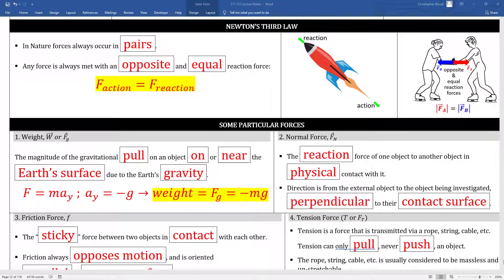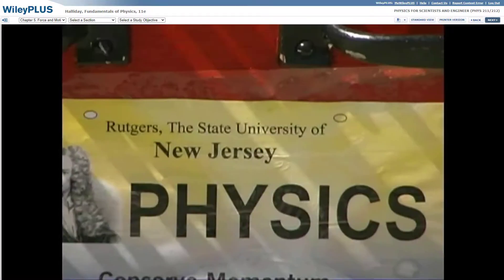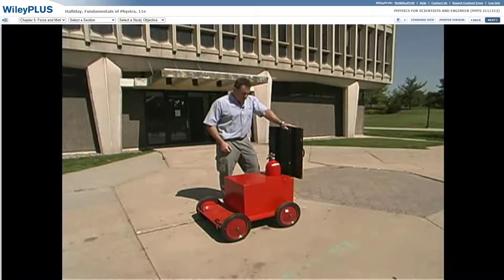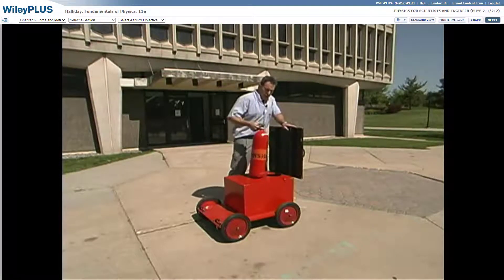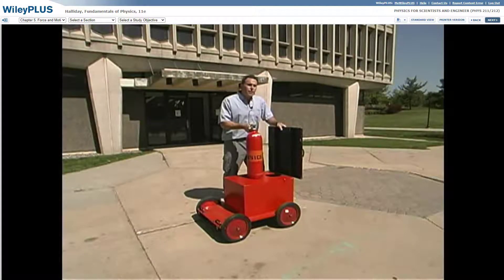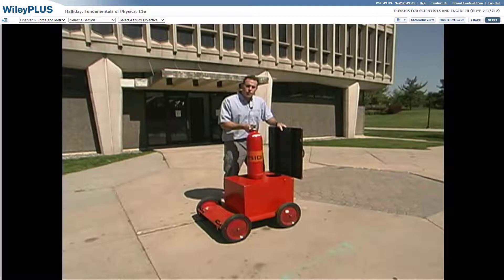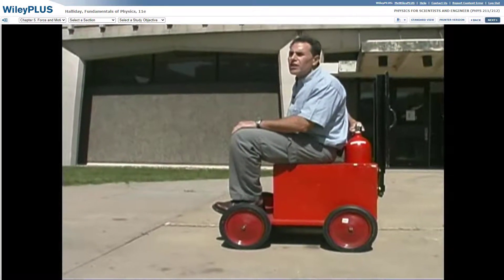Newton's third law. In nature, forces always occur in pairs. Any force is always met with an opposite and equal reaction force. You will never ever be able to point to a force that doesn't have an opposite and equal twin. You've heard this before. For every action force, there's an opposite and equal reaction force. This is how rocket engines work. The action force pushes on the rocket fuel, and the reaction force from that rocket fuel pushes on the rocket, and that's how the rocket moves. What we have here is a device we call our fire extinguisher cart. We have a very high pressure fire extinguisher where the safeties have been taken off. We have a sail on the back end, which is what we're going to spray our fire extinguisher against. So now I'm going to release all the pressure from my fire extinguisher against the sail, and we'll see what happens.